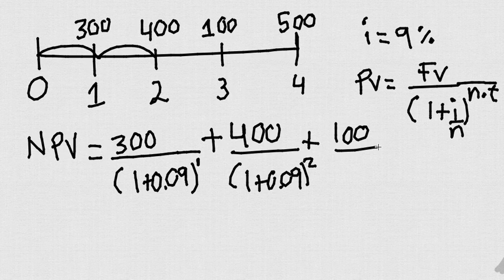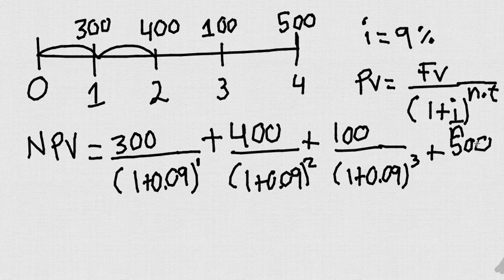Plus 100, remember I put a two because it's two periods, and hopefully you can tell me that this is going to be over three, finally 500 over one plus 0.09 to the four.